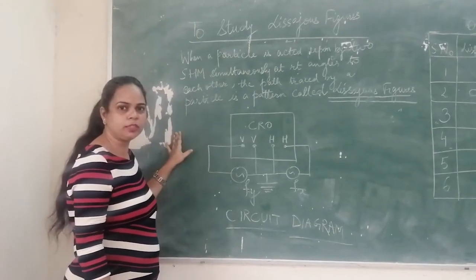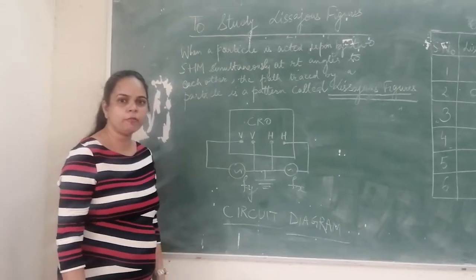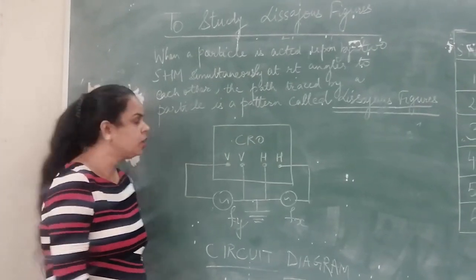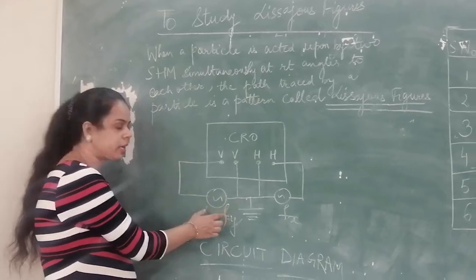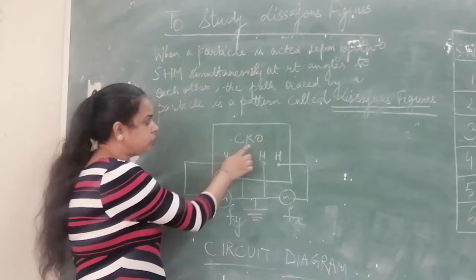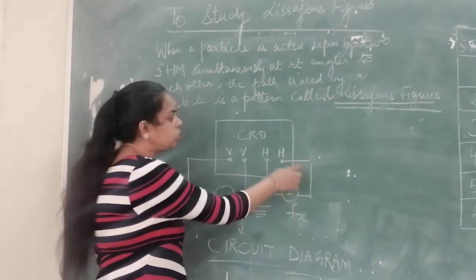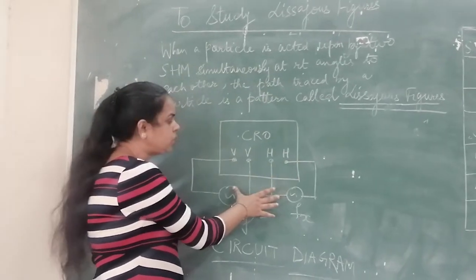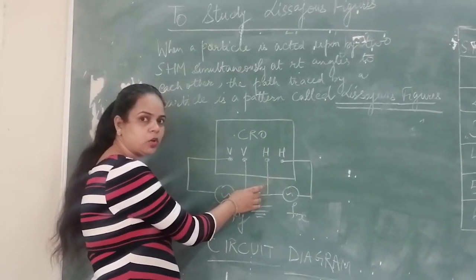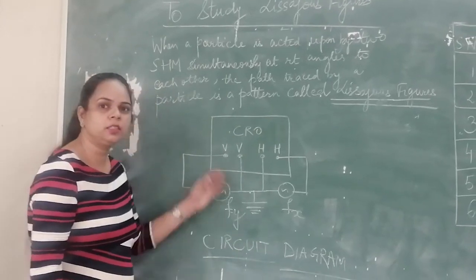So to carry out this experiment, we have the circuit diagram. In the CRO, we have to connect the x-terminal and the y-terminal to two function generators. One function generator, we have to connect the y-component to the vertical part of the CRO and the x-component of the function generator to the horizontal plane of the CRO. So when both the x-frequency and the y-frequency are acting simultaneously on the particle of the CRO, it gives a pattern which is called Lissajous figures.